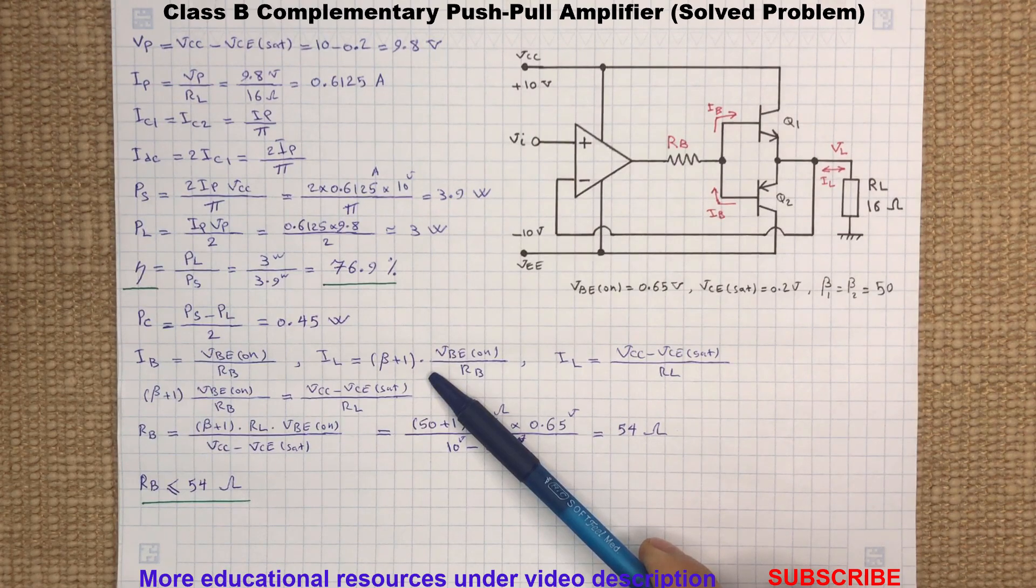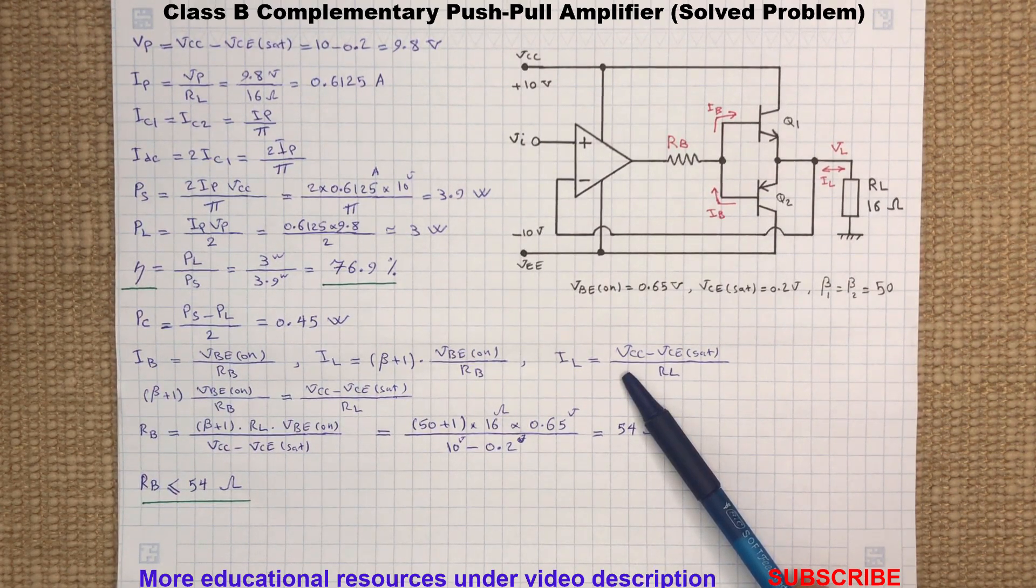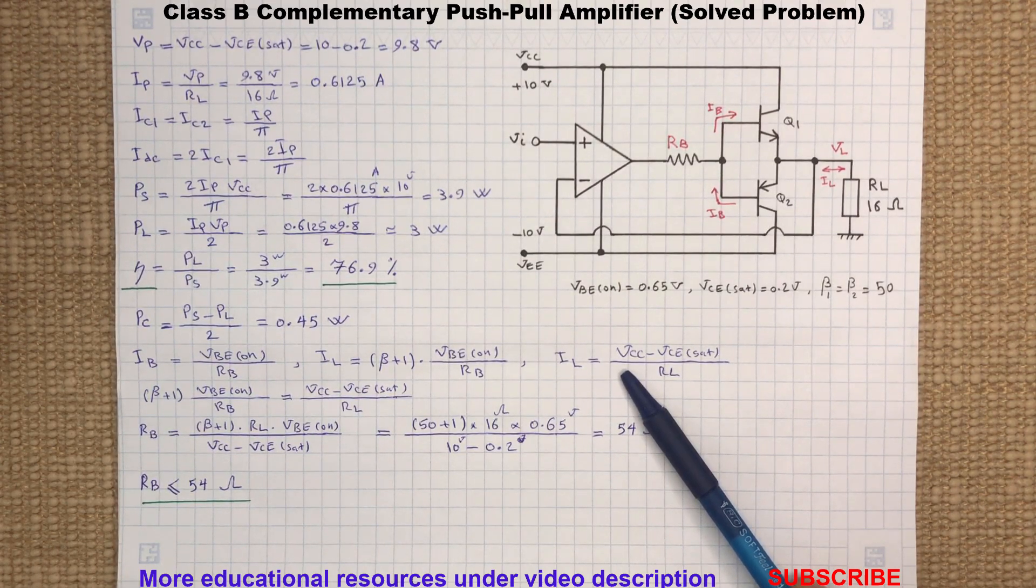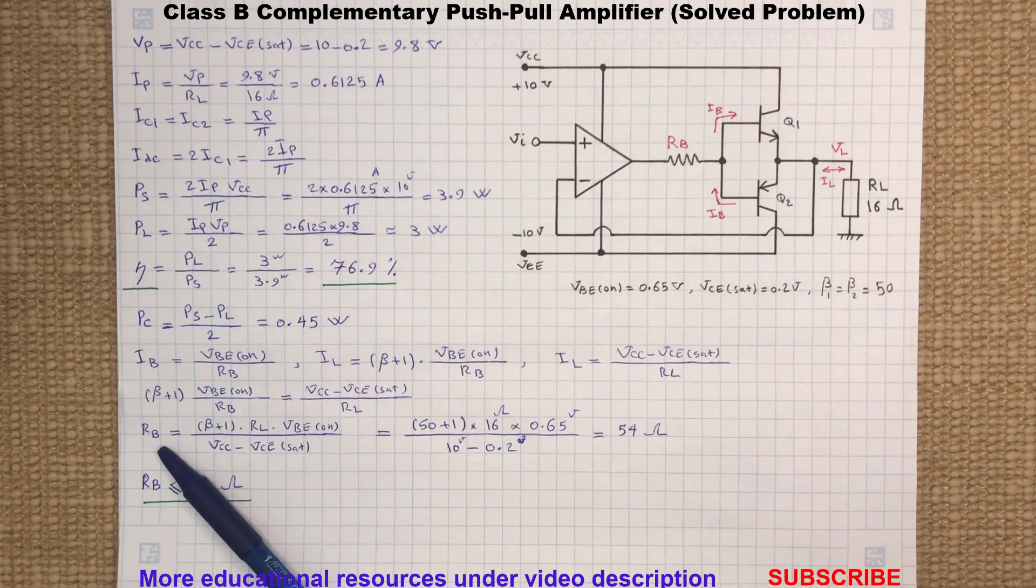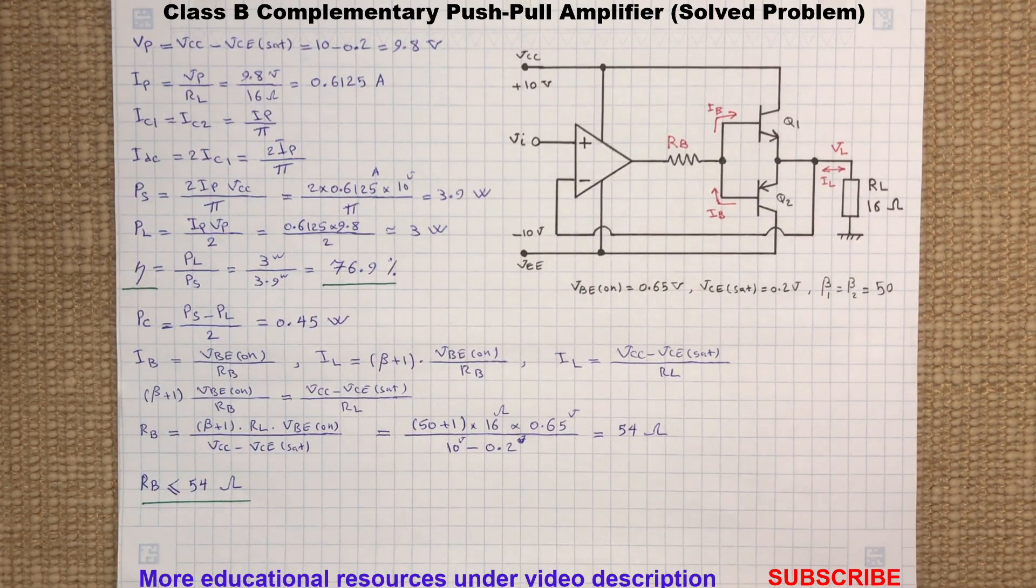The emitter current of the transistor, which here is the load current, is related to the base current by a factor of beta plus one. We already know that the load current can be determined by subtracting the collector-emitter saturation voltage from the supply and dividing by the load resistance. So by rewriting this equation for finding Rb, we can determine the maximum value for the base resistor.